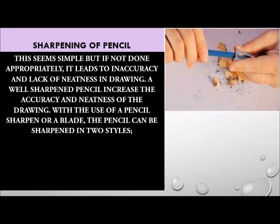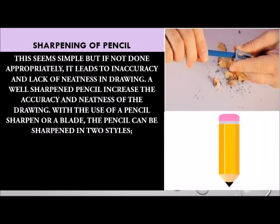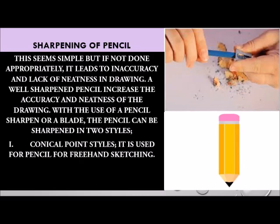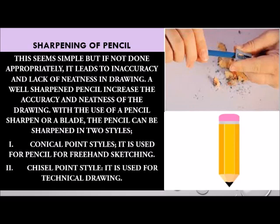Sharpening of pencil. This seems simple but if not done appropriately, it leads to inaccuracy and lack of neatness in drawing. A well-sharpened pencil increases the accuracy and neatness of the drawing. With the use of a pencil sharpener or a blade, the pencil can be sharpened in two styles: 1. Conical point style — used for pencils for freehand sketching. 2. Chisel point style — used for technical drawing.